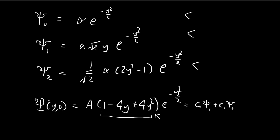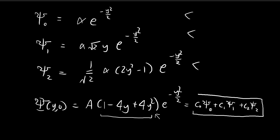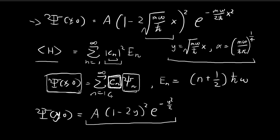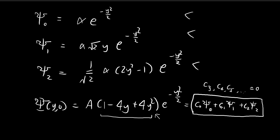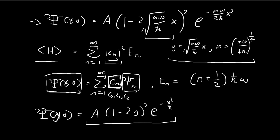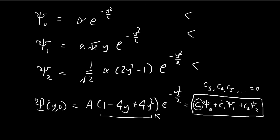Our goal is to express the initial wave function as a linear combination of ψ₀, ψ₁, and ψ₂ only. All subsequent constants c₃, c₄, c₅, and so on are equal to zero. We only need to find c₀, c₁, and c₂. Once we have these, we can take their absolute value squared to find the probability of obtaining each energy level and evaluate the expected value of the energy.